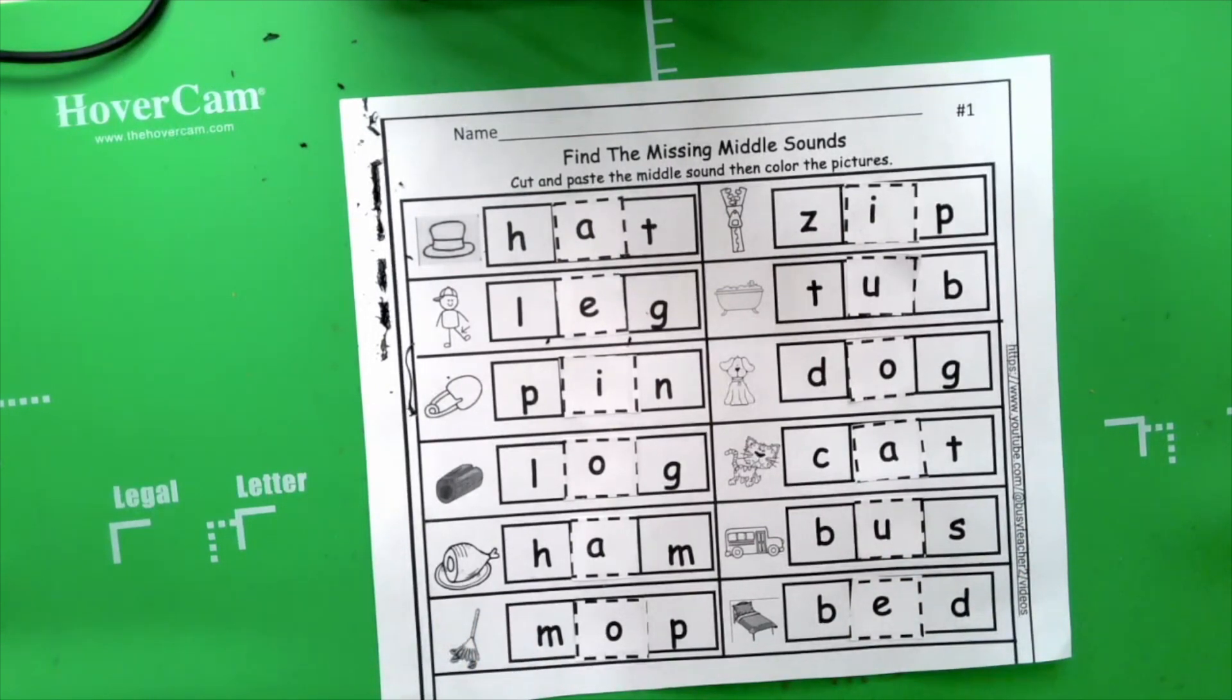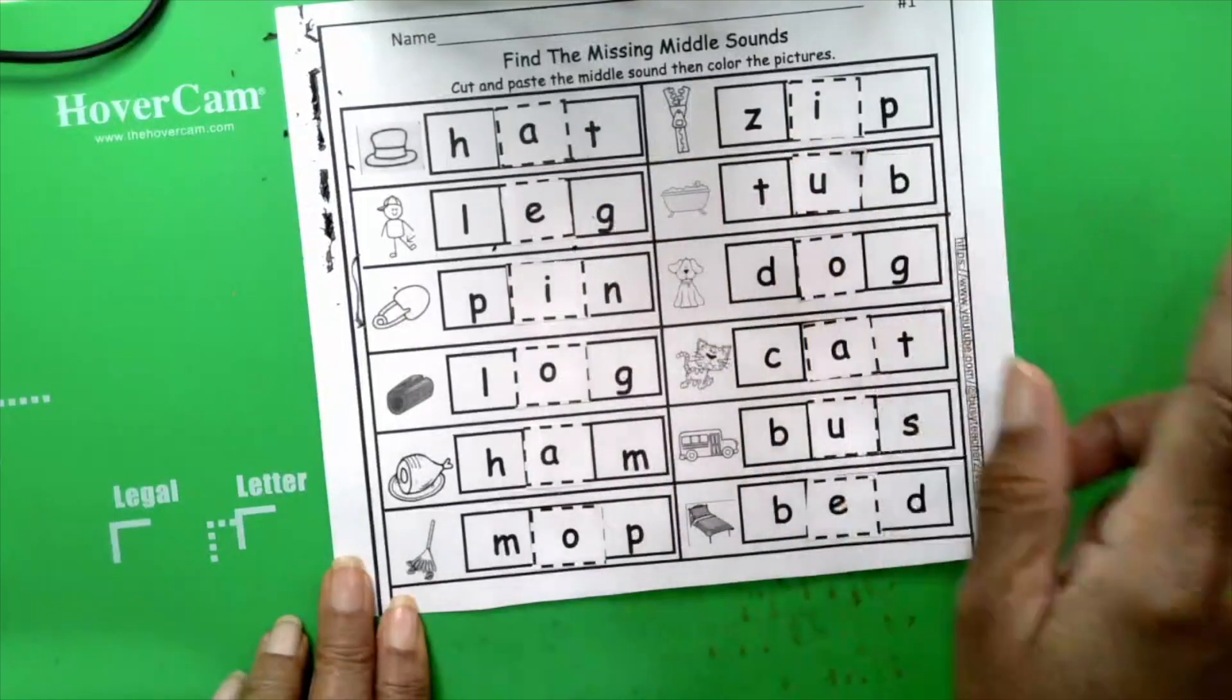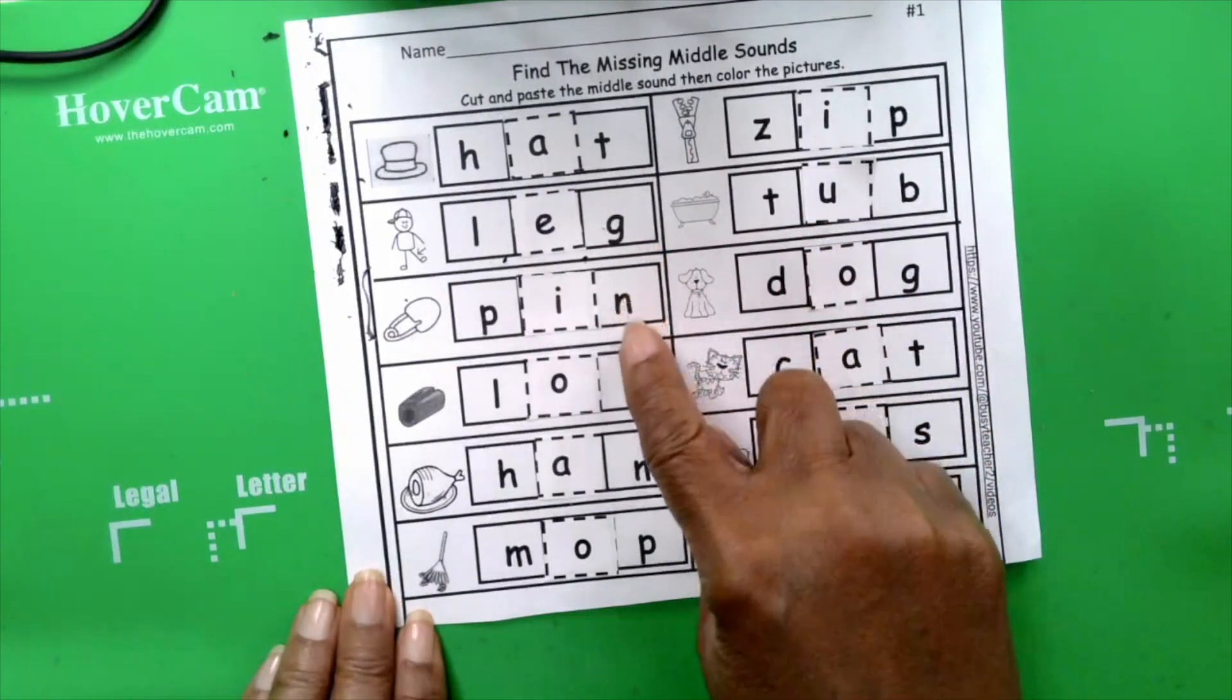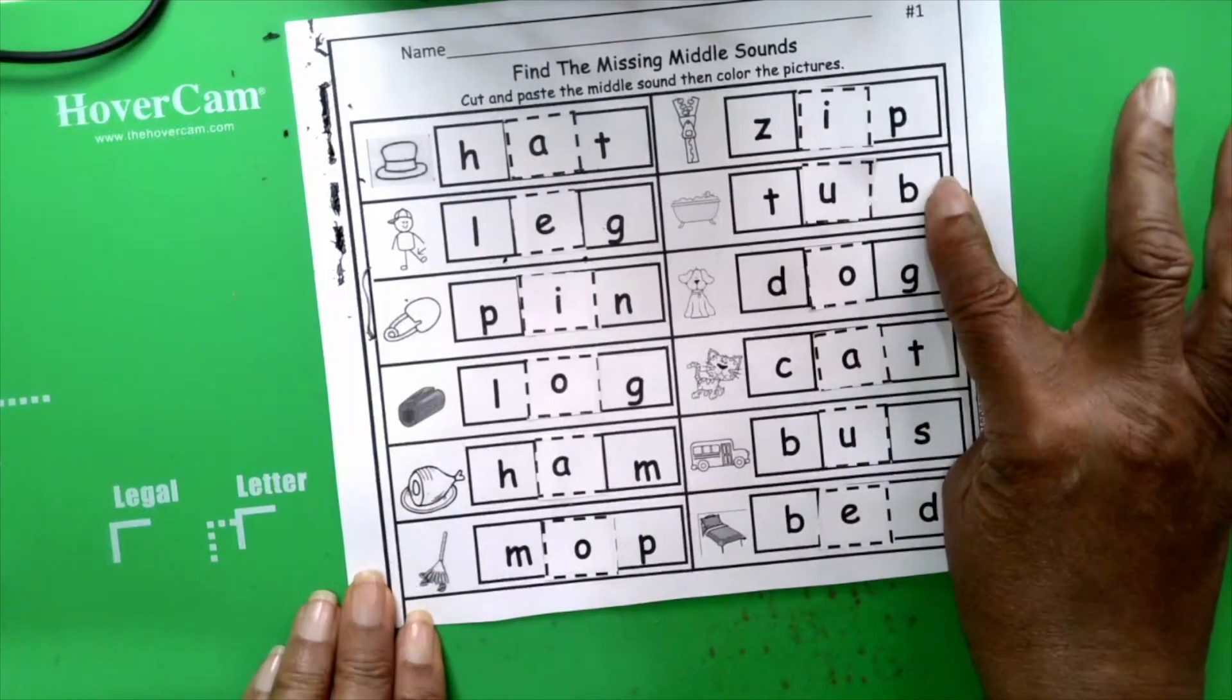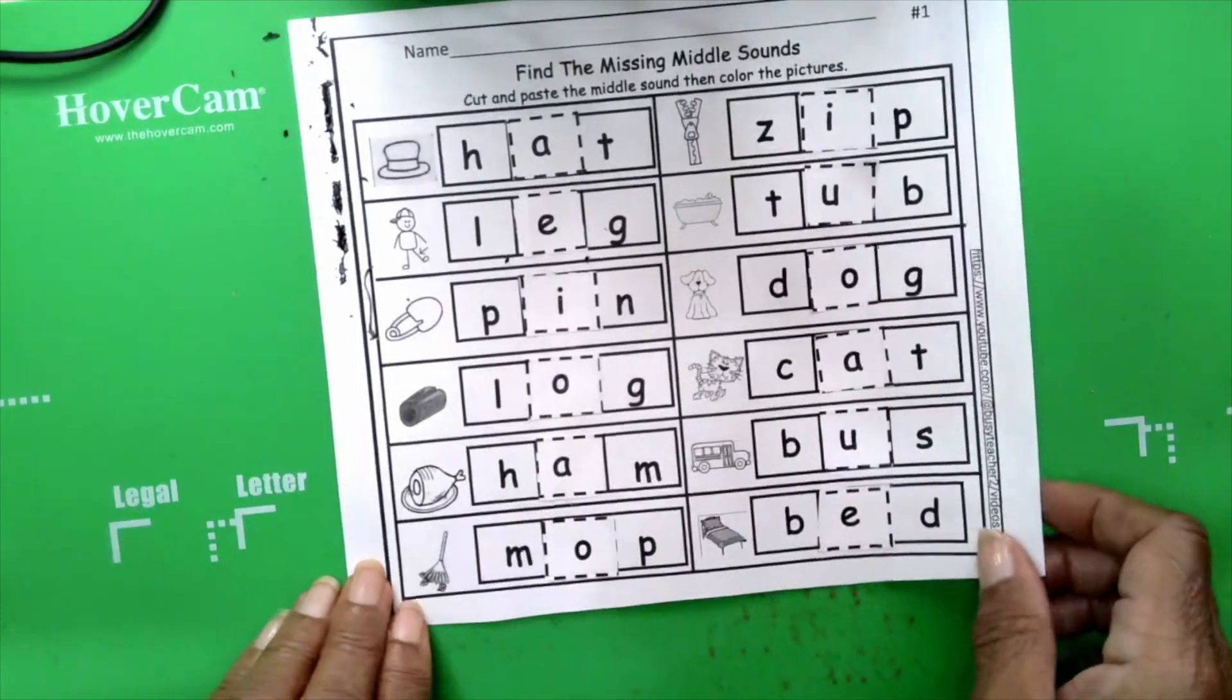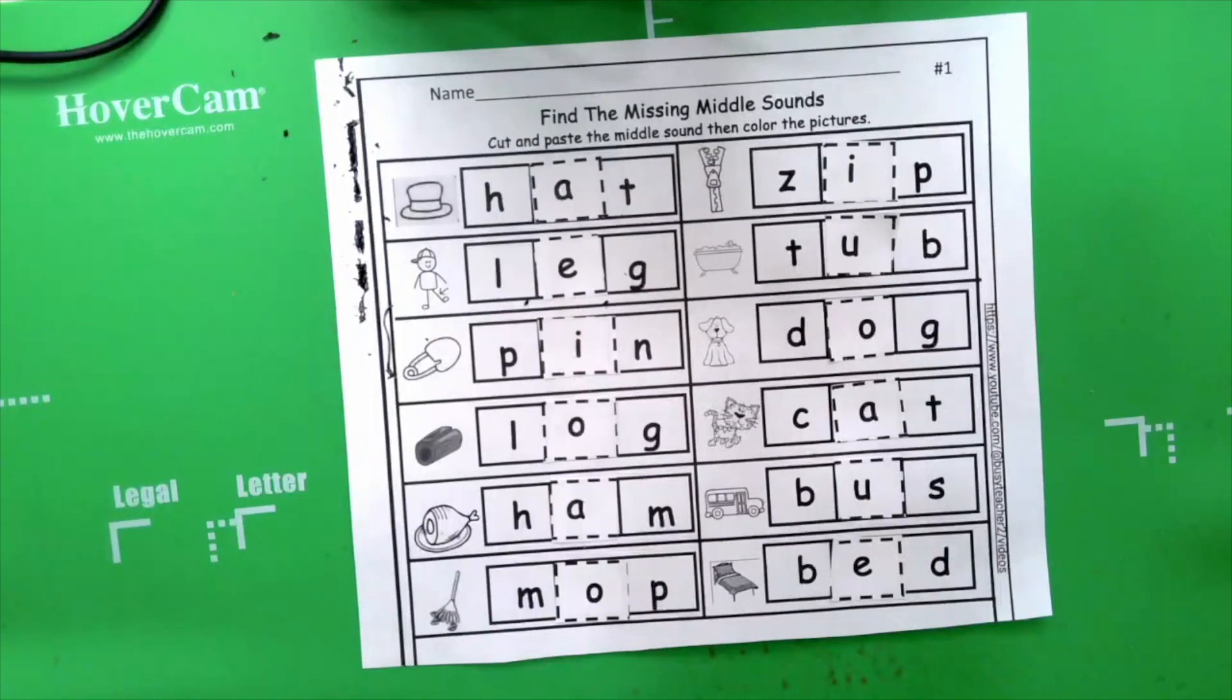We gotta say all of our words now, let's review, we followed our directions, we cut and pasted the middle sounds, let's say the words. Hat, leg, pen, log, ham, mop, zip, tub, dog, cat, bus, bed, very good boys and girls, now it's time to do my favorite thing, color the pictures. I'm going to fast forward the video, and I'll be right back.